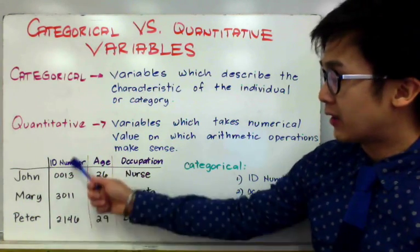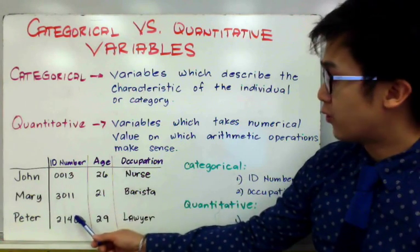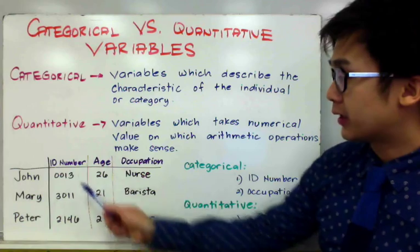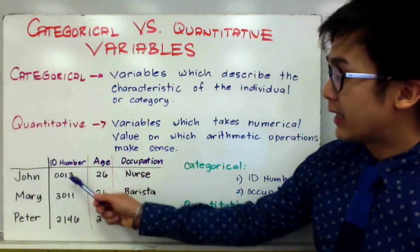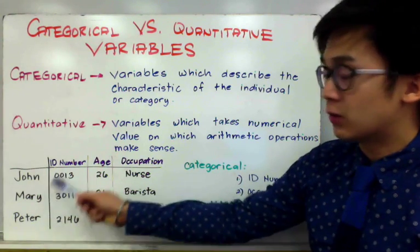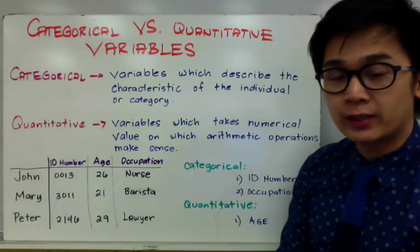That means ID number will just fall under the categorical variable because this unique set of numbers are basically identifying each of these individuals numerically. And that's the difference between categorical and quantitative variable.